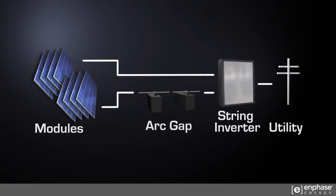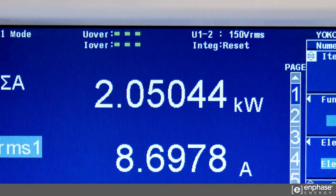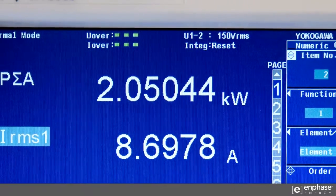The first case simulates a string inverter scenario. The inverter is exporting two kilowatts to the grid.